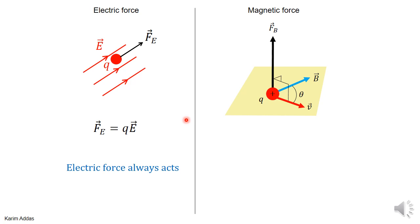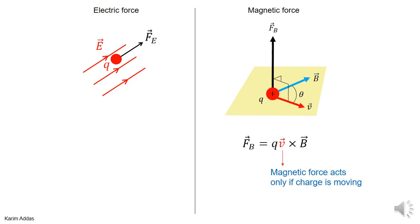Let's look at the electric force. The electric force always acts. If you put a charged particle in an electric field, it will always act on the charged particle, no matter if the charge is at rest or if it's moving. For the magnetic force, the magnetic force is Q V cross B. Since there's a V, if the velocity of the charge is zero, then the force is zero. So the magnetic force only acts if the charge is moving.